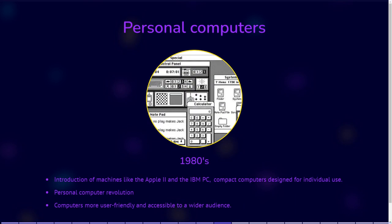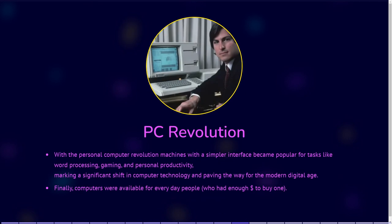In the late 70s and early 80s, the personal computer revolution took off with the introduction of machines like the Apple II and the IBM PC. These compact computers were designed for individual use, making computers significantly more user-friendly and accessible to a wider audience. With the personal computer revolution, machines with a simpler interface became popular for tasks like word processing, gaming, and personal productivity, marking a significant shift in computer technology and paving the way for the modern digital age. Finally, computers were available for everyday people, or at least those who could afford them.